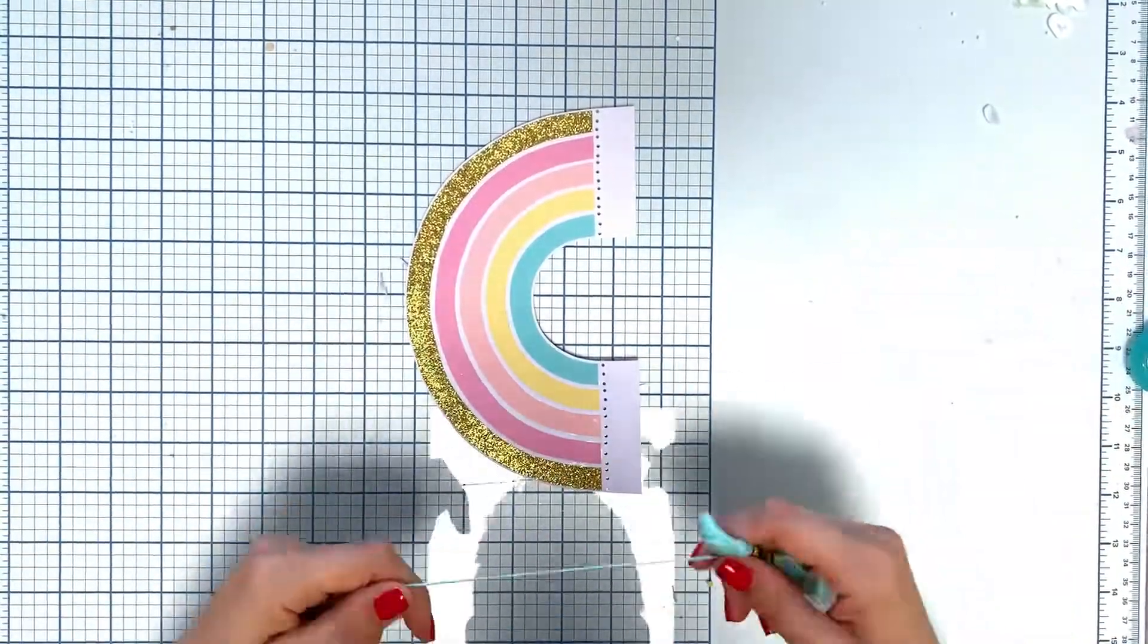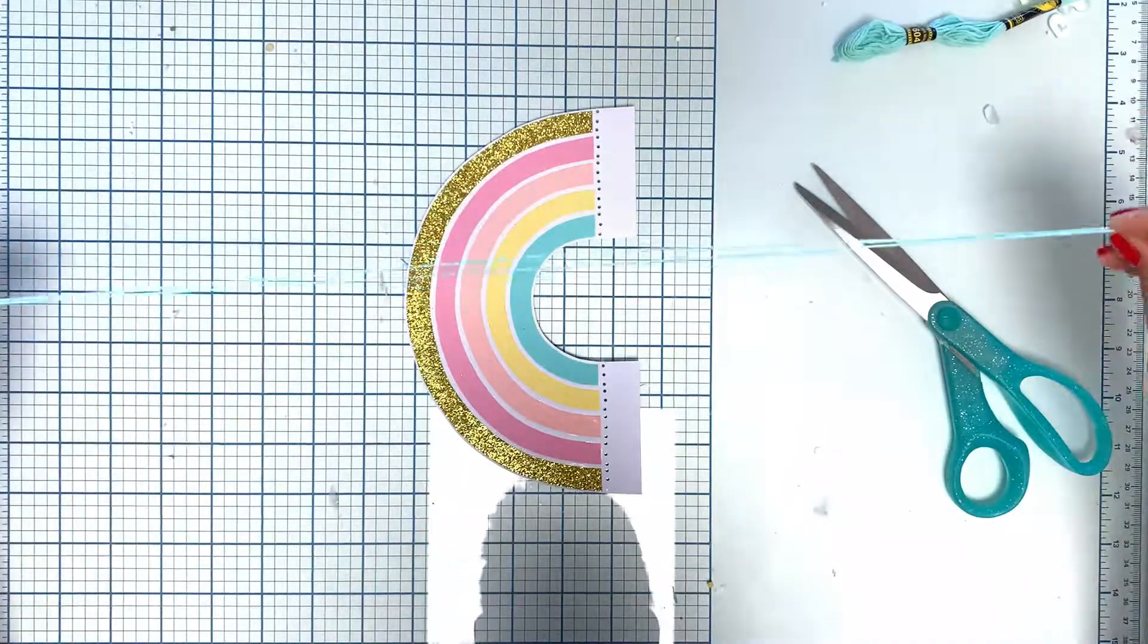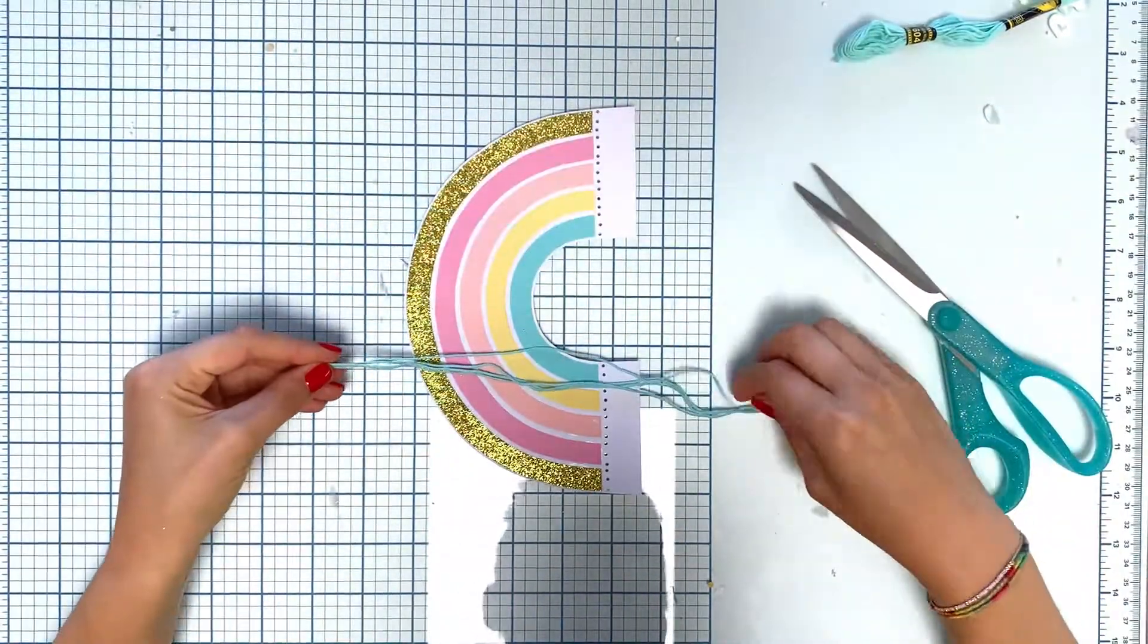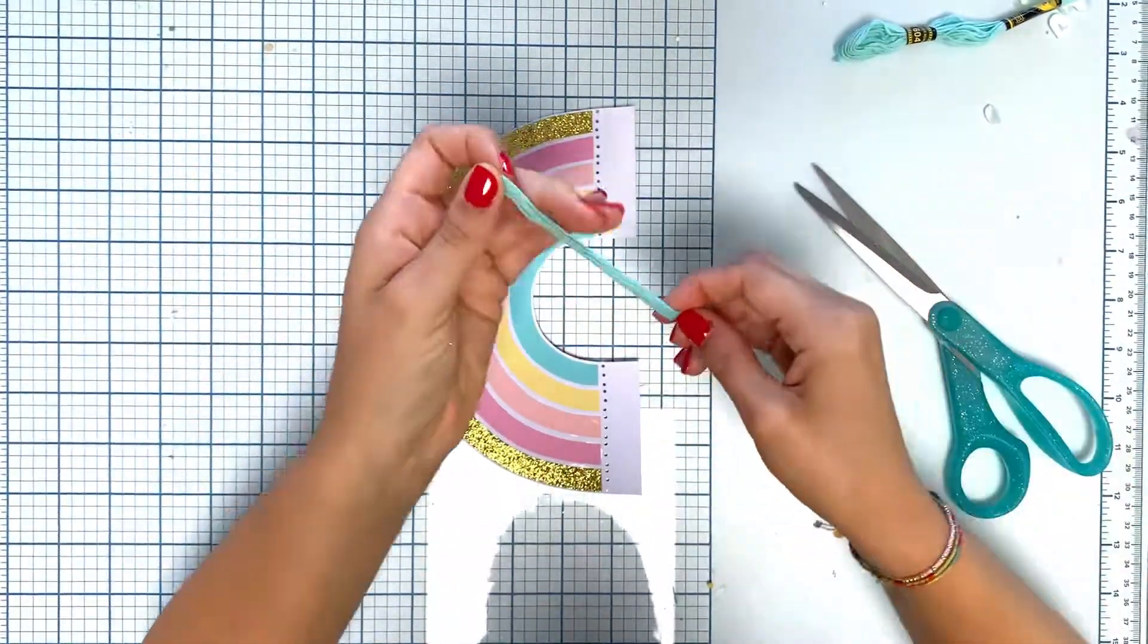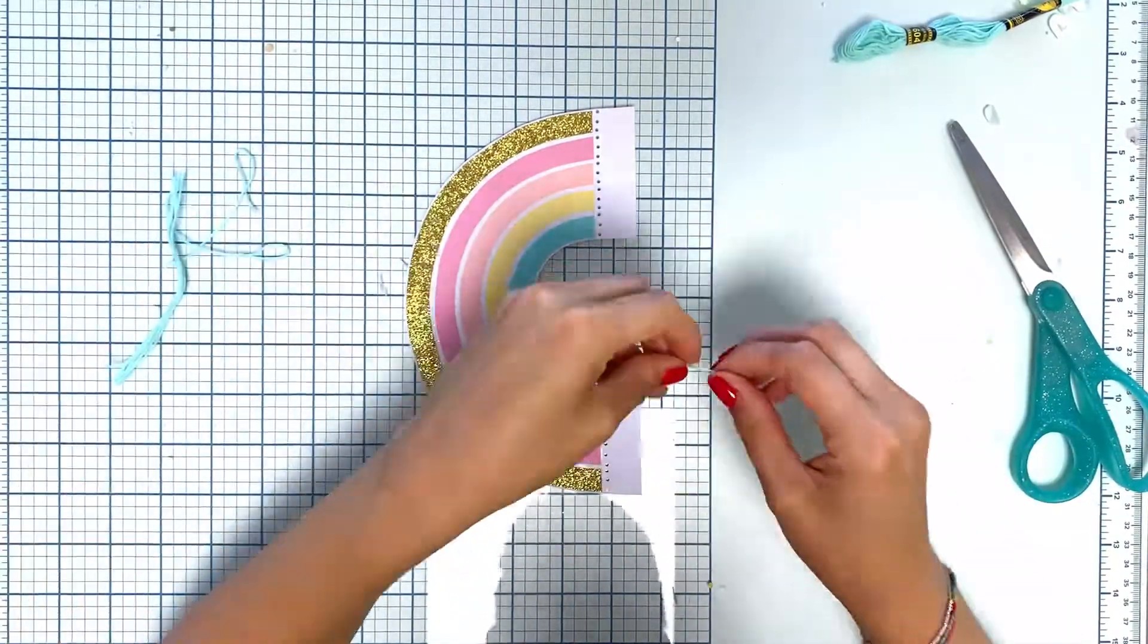I took my crop dial on the lowest setting, so it's the smallest hole you can pierce, and I think it's one-sixteenth of an inch. Then I just punched my holes.